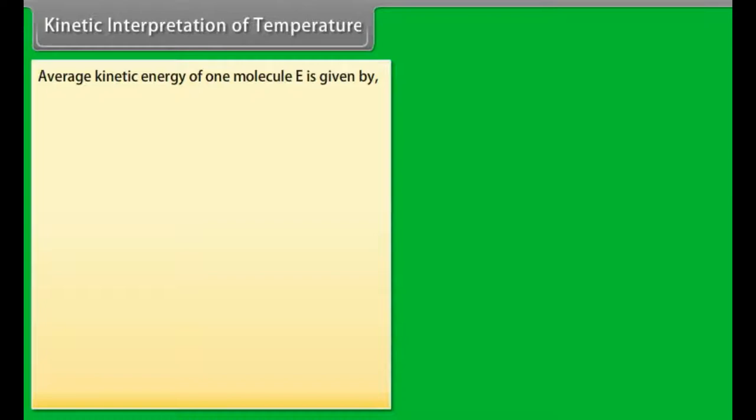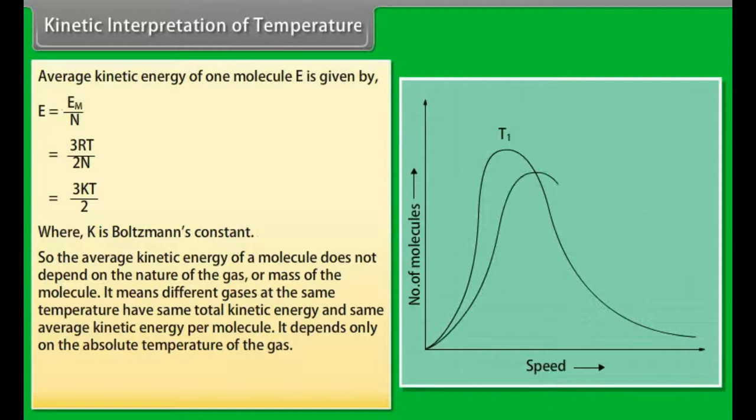Average kinetic energy of one molecule E is given by E equals Em/N equals 3RT/2N equals 3KT/2, where K is Boltzmann's constant. So the average kinetic energy of a molecule does not depend on the nature of the gas or mass of the molecule. It means different gases at the same temperature have same total kinetic energy and same average kinetic energy per molecule. It depends only on the absolute temperature of the gas. Temperature can be interpreted as a measure of the average kinetic energy of the molecules of a gas.